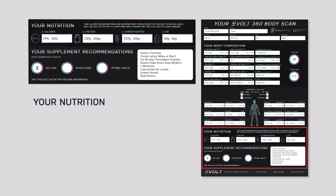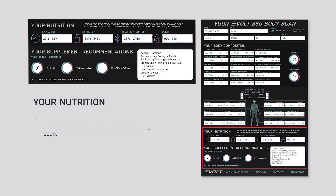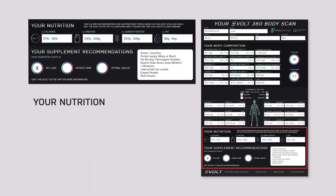The last part is the nutrition section. This goes through and shows macronutrient data based on the questionnaire you filled out on the scan itself. The first question was what is your goal — either to build muscle, lose fat, or better health. The next question was what is your body type.